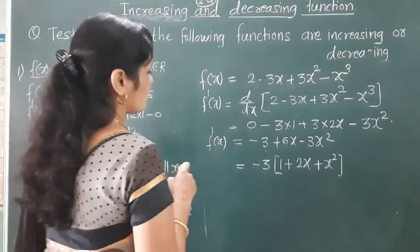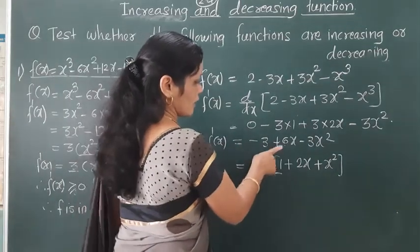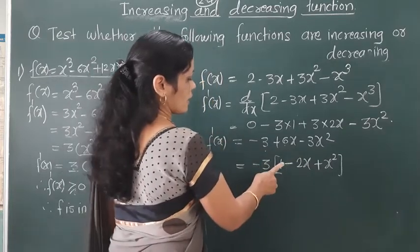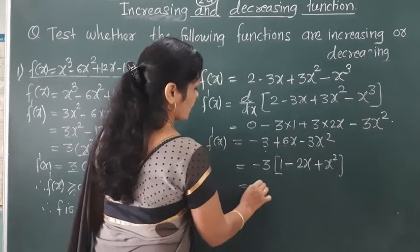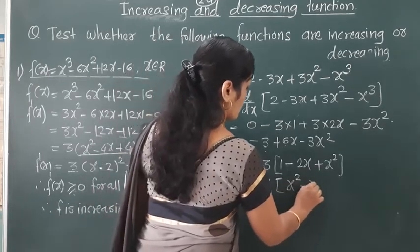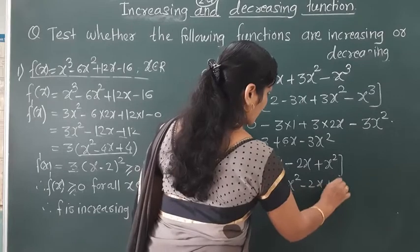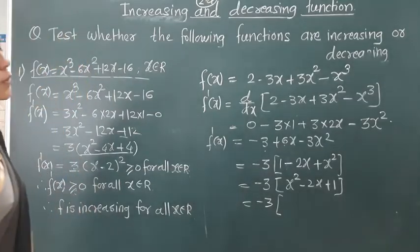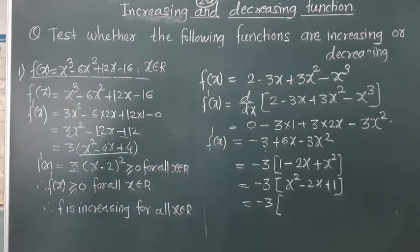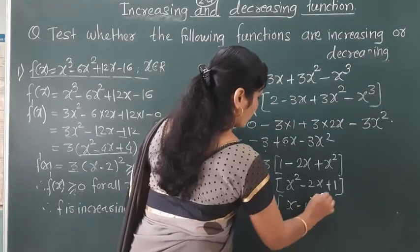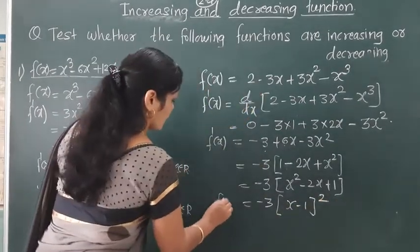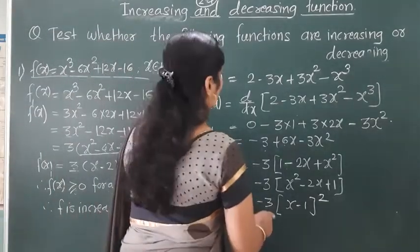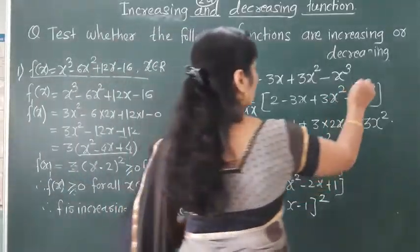We factor out -3 from f'(x) = -3 + 6x - 3x², giving f'(x) = -3(x² - 2x + 1). Recognizing the perfect square, this equals -3(x - 1)². This holds for x belonging to R.